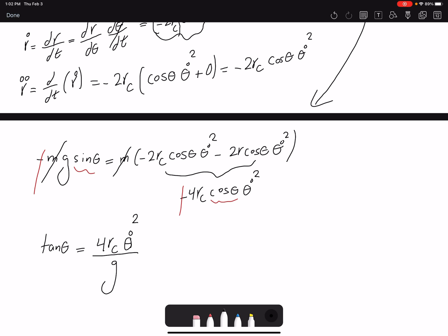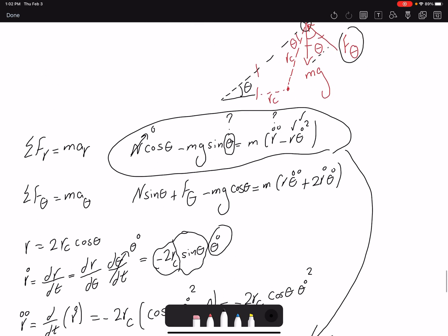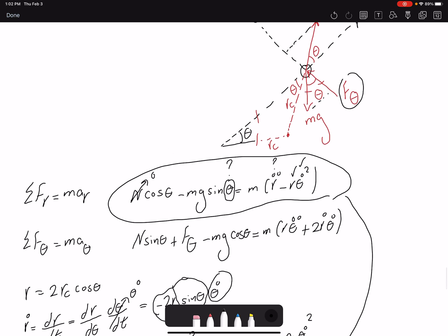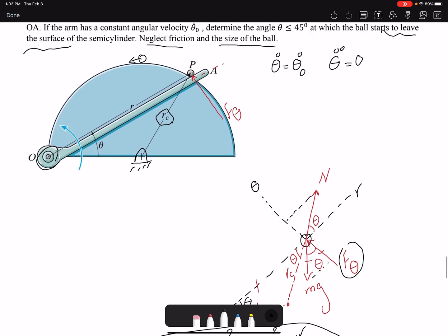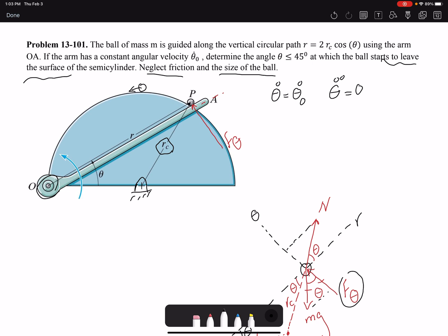Therefore, I think theta would be tangent inverse of 4Rc theta dot squared over G. And that would be the value that I have for theta. So it leaves the surface. And we could go with that theta and find F theta here, but the problem is not asking for the force that is acting on the ball.